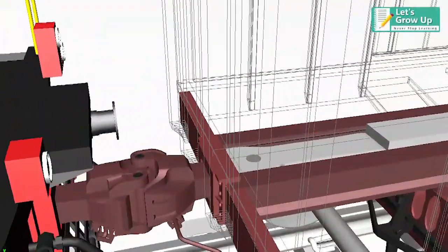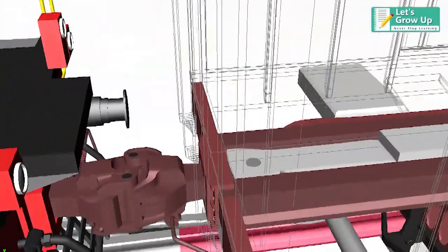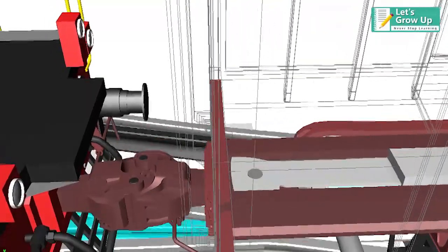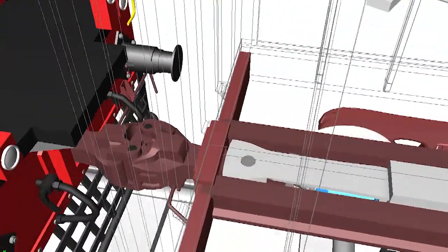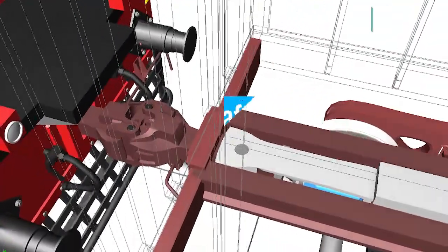A draw gear, also known as a draft gear, is the assembly behind the coupling at each end of the wagon to take care of the compression and tension forces between the wagons of trains. In this video we will learn the CBC draft gear and its working.